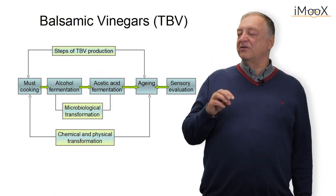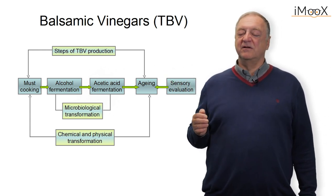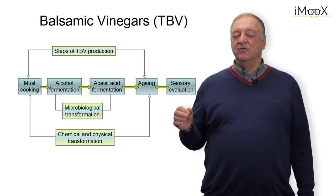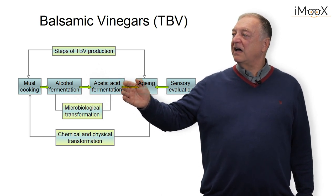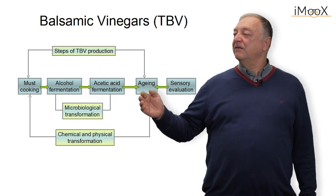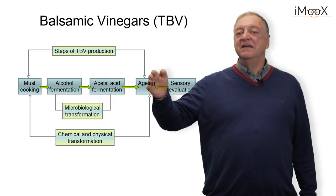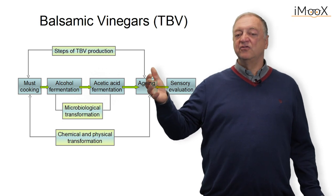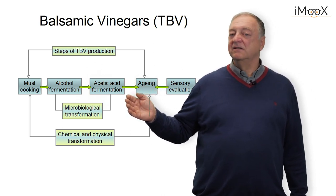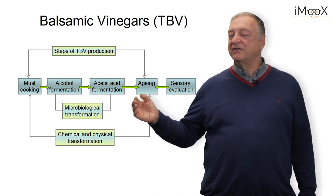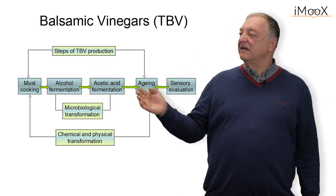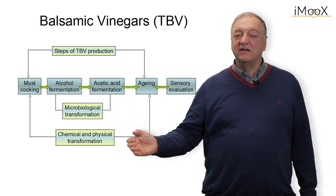When we talk about a specific vinegar product, for example traditional balsamic vinegar produced in the Modena region of Italy, we can see that the core fermentation — alcohol production and acetic acid fermentation — is the same as in any other vinegar production. However, what is done preliminarily before the alcohol fermentation is the cooking of the must, and after fermentation there is an aging process of several years, up to 18 years, followed by sensory evaluation before the product is sold. So there are two types of transformation: microbial transformation and chemical and physical transformation.